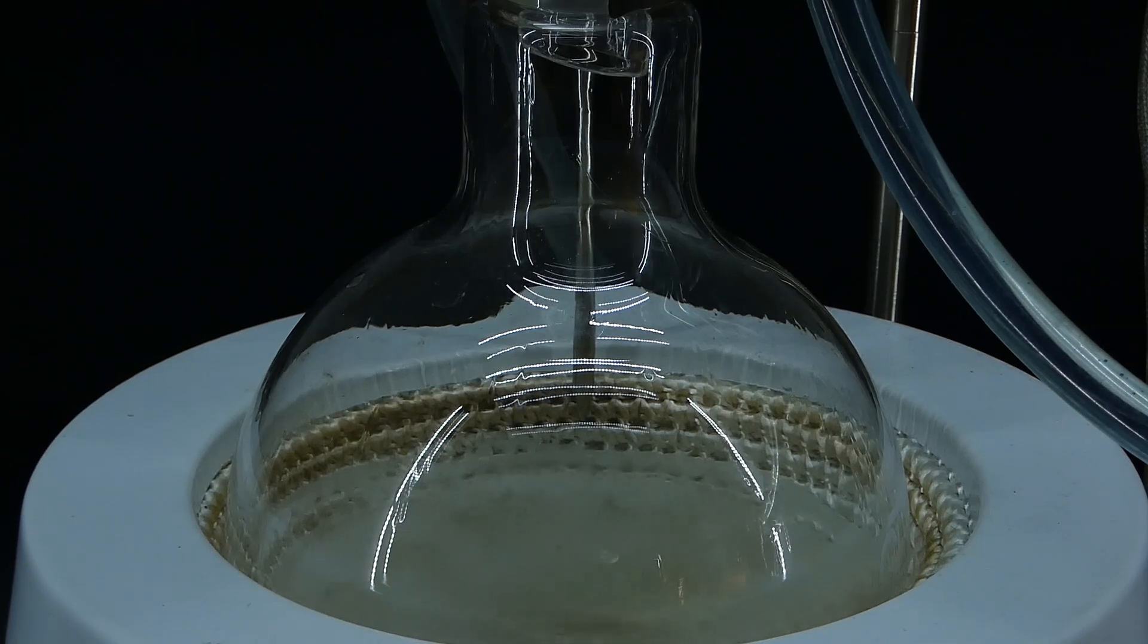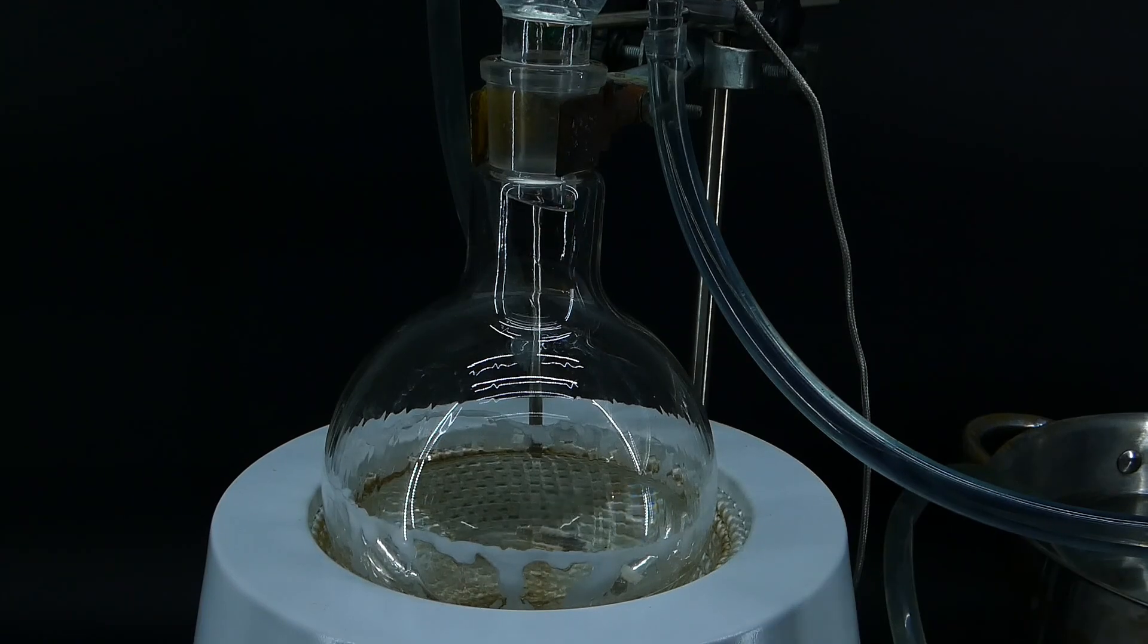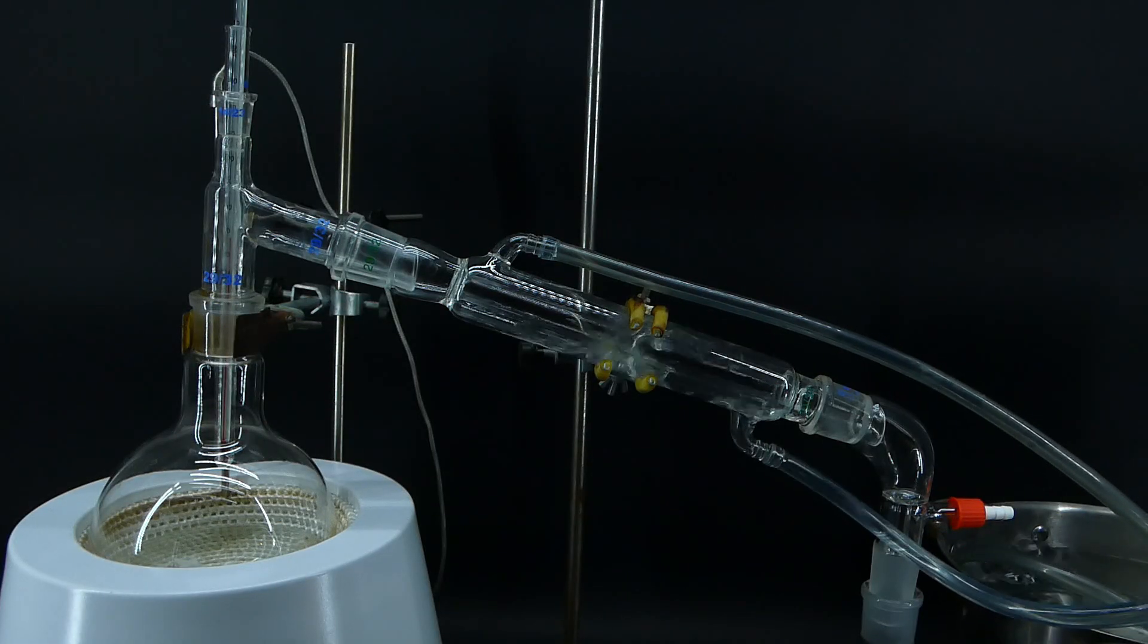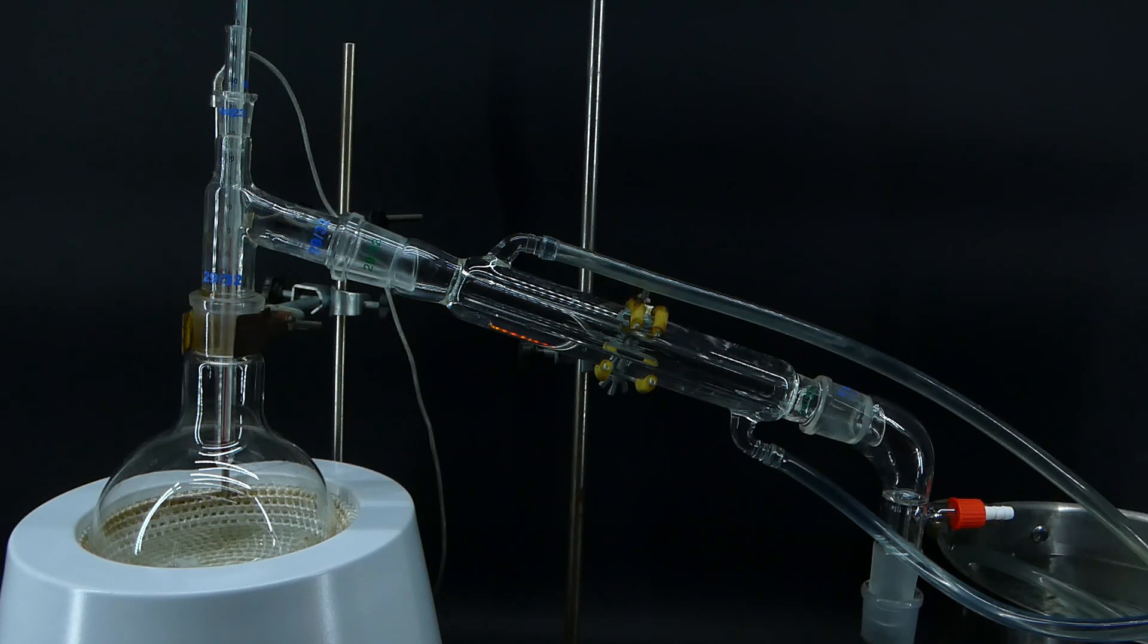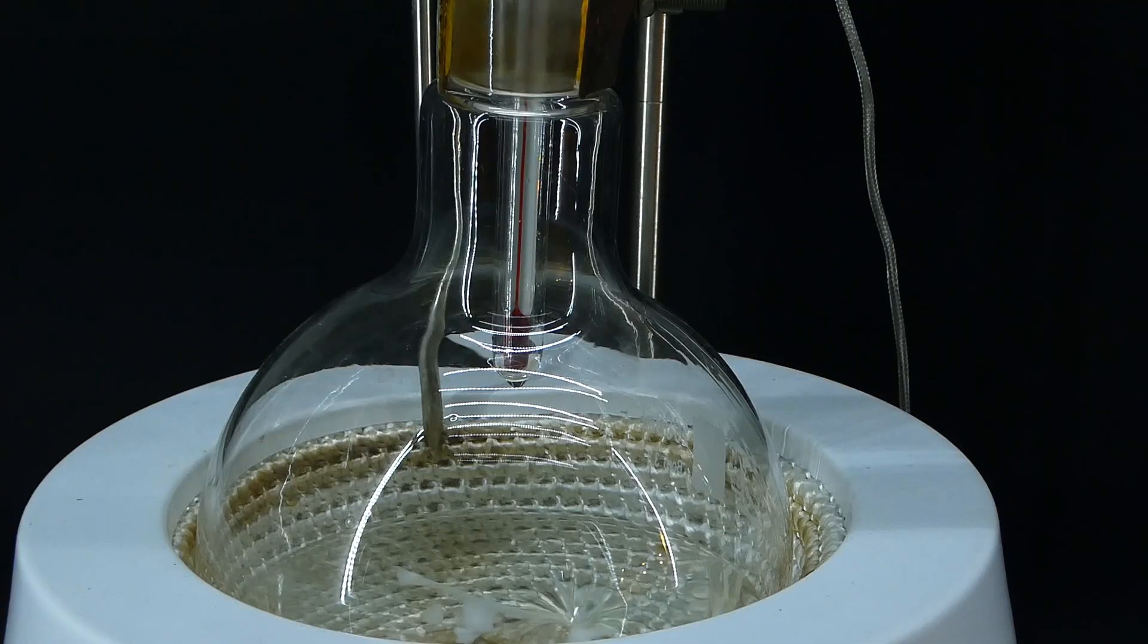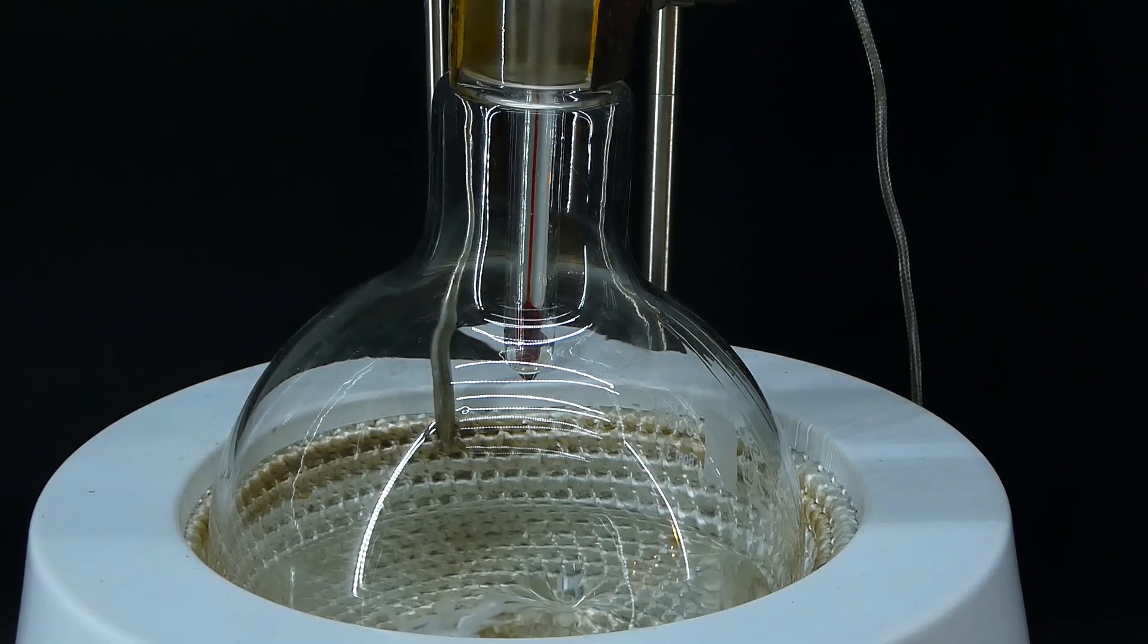After about 40 minutes of refluxing, I took the mixture off the heat, allowed it to cool, and started to assemble a simple distillation apparatus in the place of the reflux. After that was done, I turned on the heating and allowed the mixture to slowly distill.